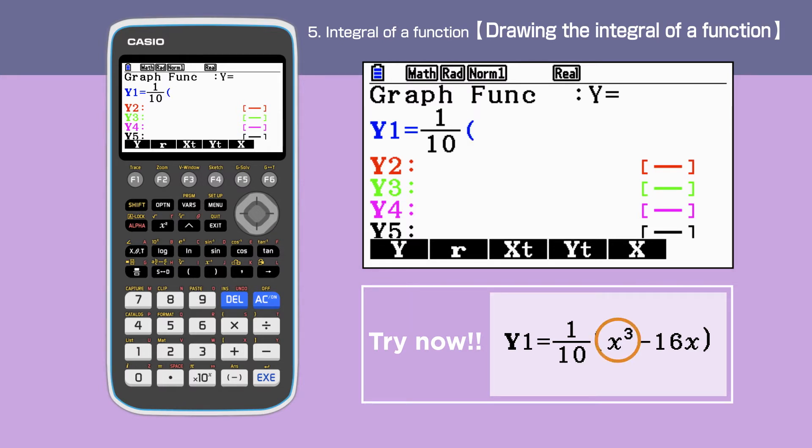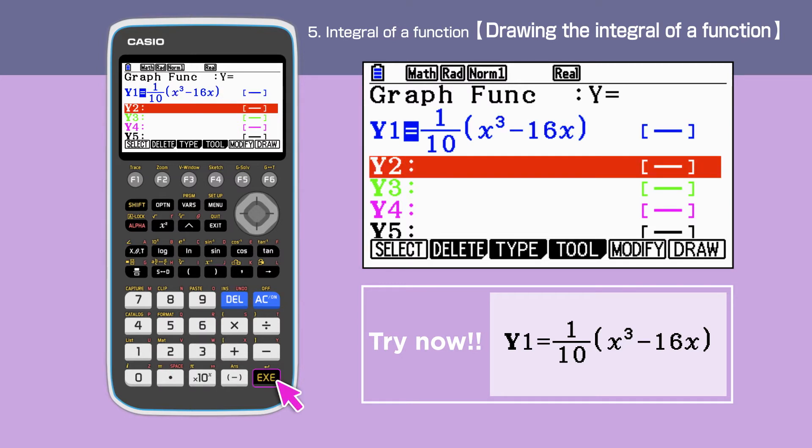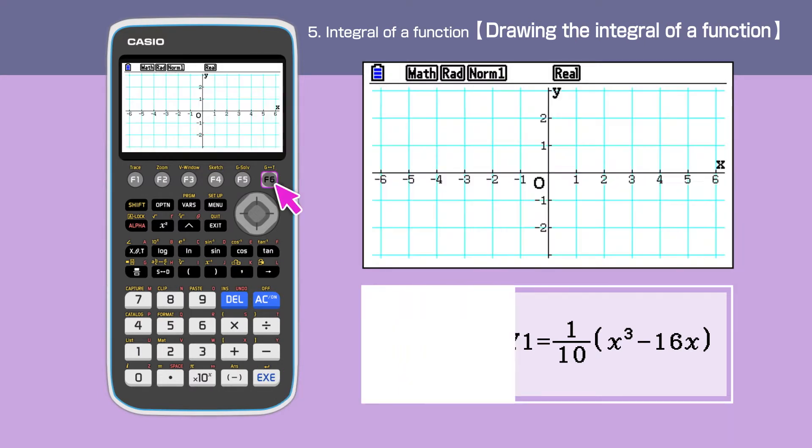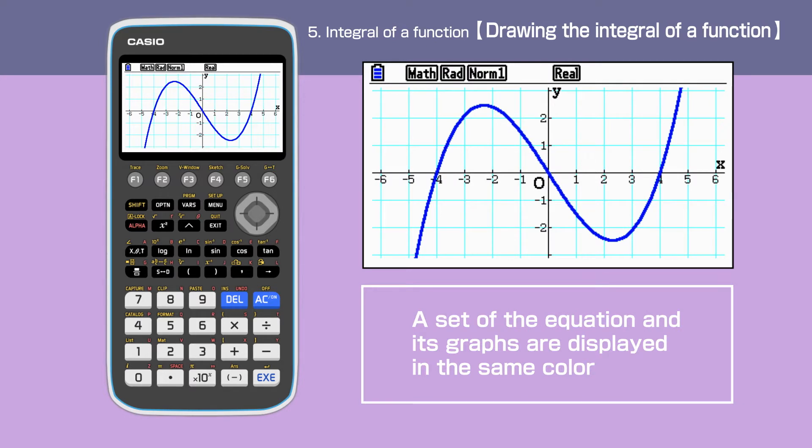To get the power of 3, we will need to press the x theta t key, then hat key. Press F6 to draw the graph. The graph is drawn.